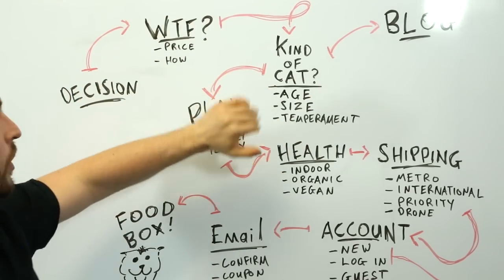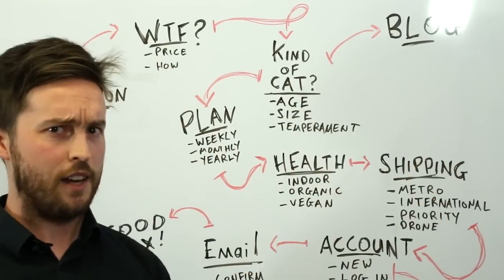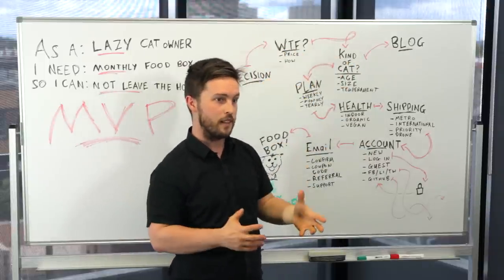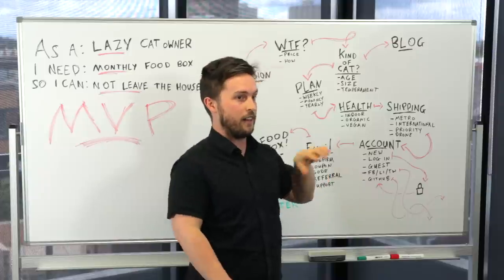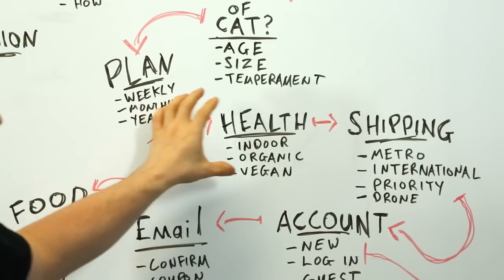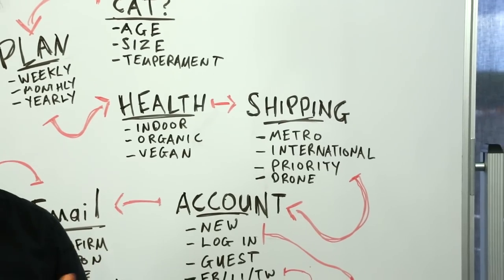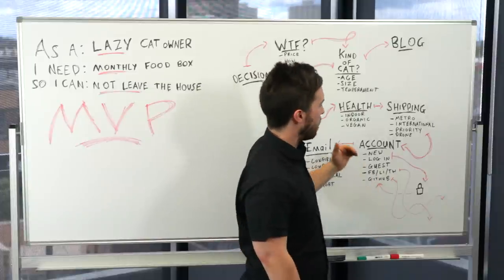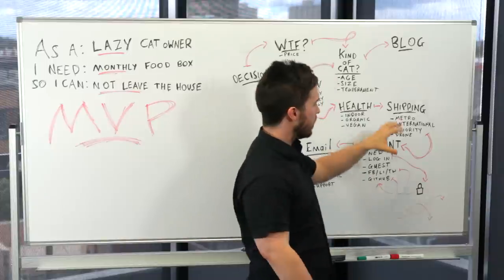So first we've decided we want to know what kind of cat because we want to know the age, the size, the temperament. This might lead to blog posts about ages and sizes and temperaments of cats. It might lead through to the plan, do we want weekly or monthly delivery for fat and skinny cats. We might want to know about the health of the cat, are they an indoor or outdoor cat, do they need organic or vegan cat food. With the shipping, does it need to be in the city of Melbourne or should it be international so we're dealing with Canadians and Southeast Asia and Melbourne all under the same brand. Is there priority shipping for if you really need food for your cat, can it be delivered by drone.